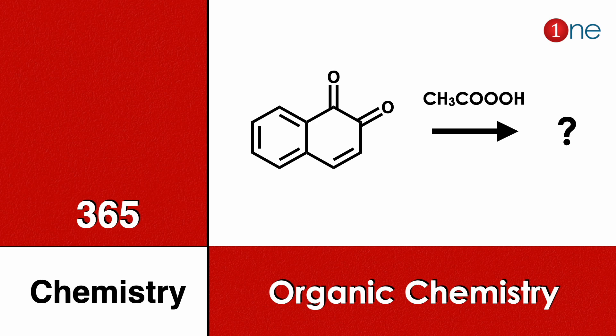Welcome to one chemistry. This is the 365 chemistry series — organic chemistry questions for you. Here you have a fused system: benzene and cyclohexane, with a conjugated ketone. Here in the peroxide, you should find what will be the final product.